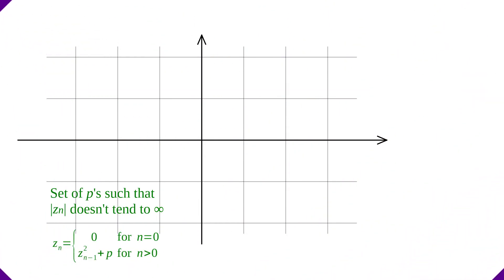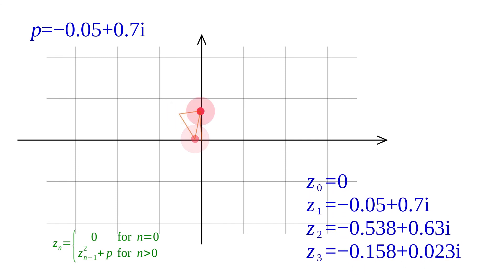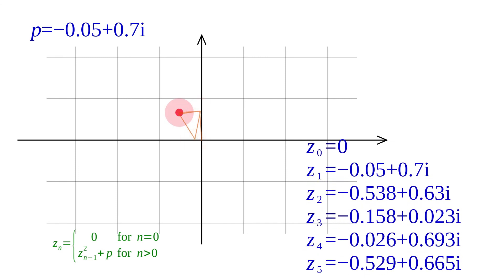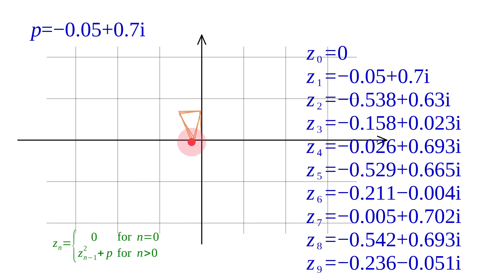I said this is the set of values of parameter p for which the absolute value of Zn doesn't tend to infinity. Does it mean that it converges to a finite number? Not necessarily. For some values of p there is an attracting cycle. You see an example of a cycle of length 3. The point appears in three places and then it repeats.